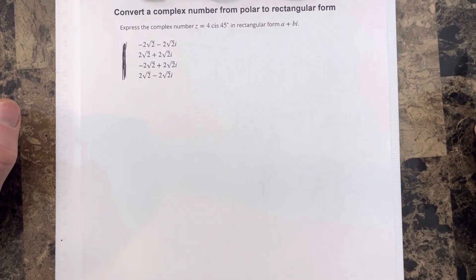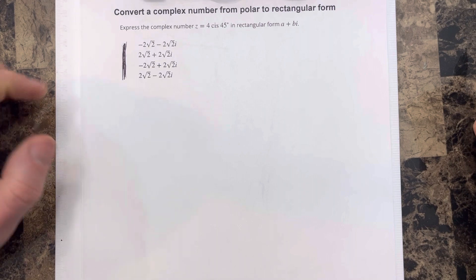In this video, we're going to convert a complex number from polar to rectangular form. It says express the complex number Z equal 4 cis 45 degrees in rectangular form A plus B I.